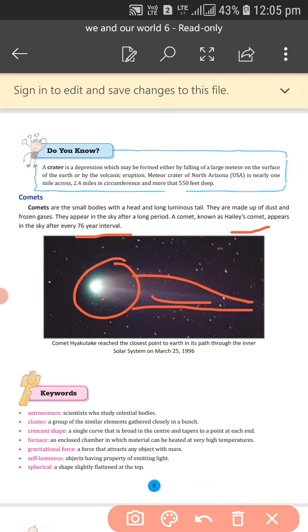Next is the keywords. Astronomer: scientists who study celestial bodies. Cluster: a group of elements. Crescent shape: the shape of the moon. Furnace: a chamber where the temperature is very high. Gravitational force: the force that attracts objects to Earth. Self-luminous: objects that emit their own light. Spherical: round shape like the Earth.